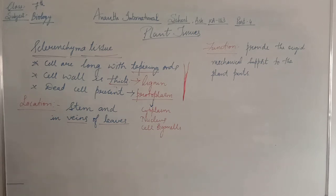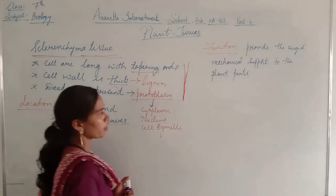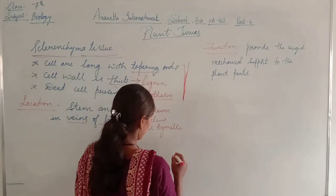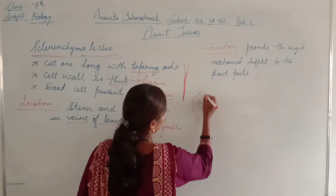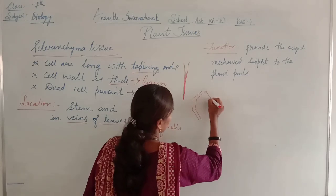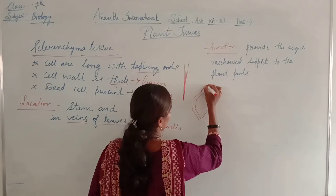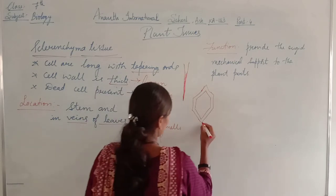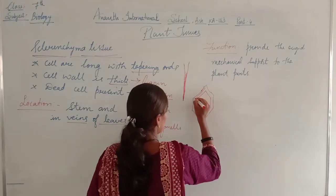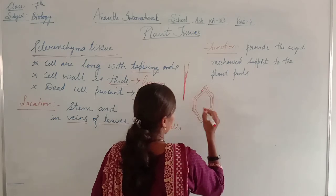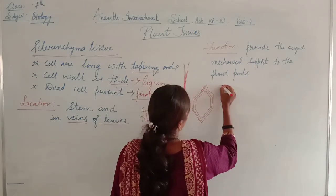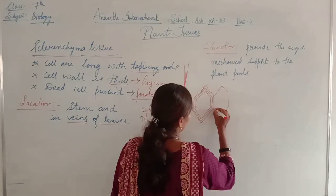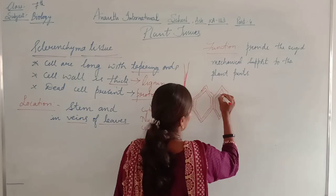Let us take a diagram of sclerenchyma tissue. The cells can be polygonal in shape — for example, hexagonal, which has six sides. Polygonal means having more than five sides. You should refer to your textbook for the proper diagrams. The cells show long tapering ends, and in between the cells the nucleus and other cell organelles will be present. The cell wall is thick and dead cells are present in sclerenchyma tissue.